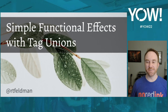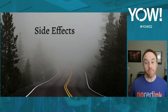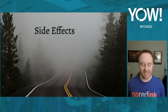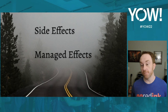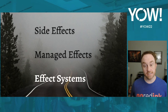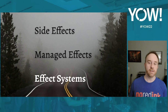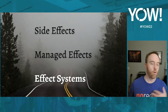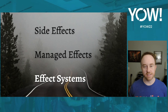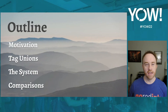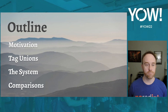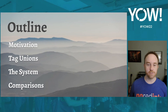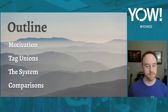This is Simple Functional Effects with Tag Unions. I'm Richard Feldman. Back in the day the only way to do effects were side effects. Later on we got managed effects, which are ways to organize your effects like promises, tasks, and futures. Nowadays we also have effect systems, which are ways to transform effects or make them easier to test. Today I'm going to talk about one particular effect system, starting with the motivation, then tag unions as the underlying language feature, the system itself, and finally comparisons to other effect systems.